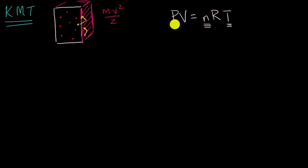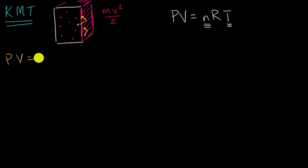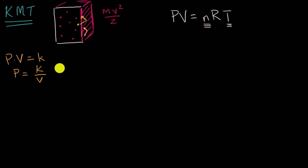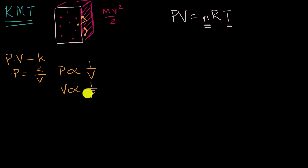Let's first think about how pressure relates to volume if we hold everything else constant. The ideal gas law tells us that pressure times volume equals a constant, which means we can say pressure equals some constant over V. In other words, pressure is proportional to the inverse of volume. Equivalently, volume is proportional to the inverse of pressure.